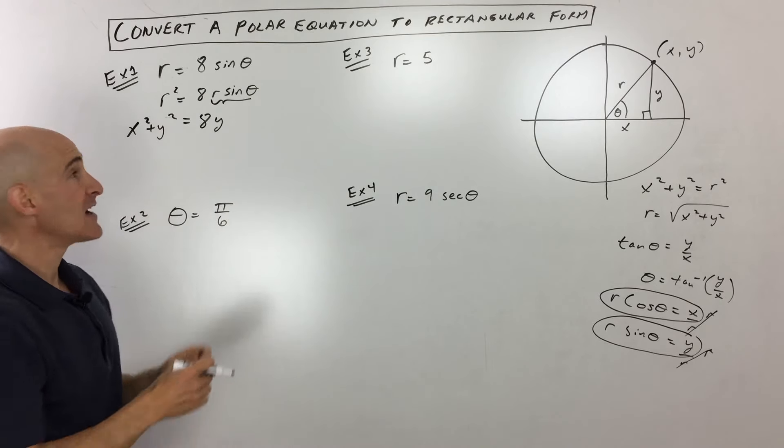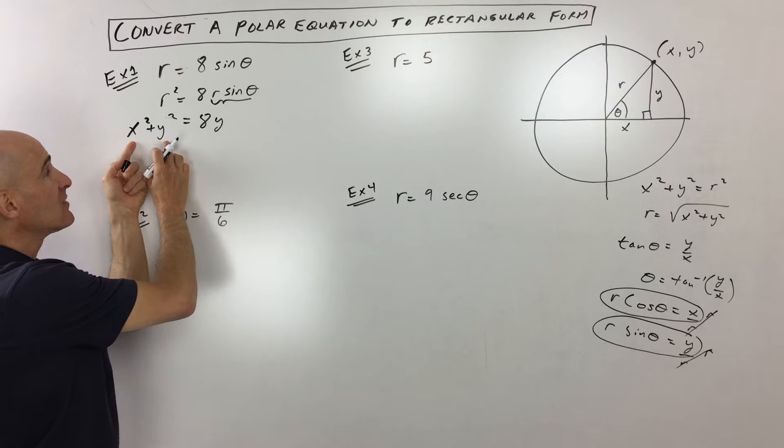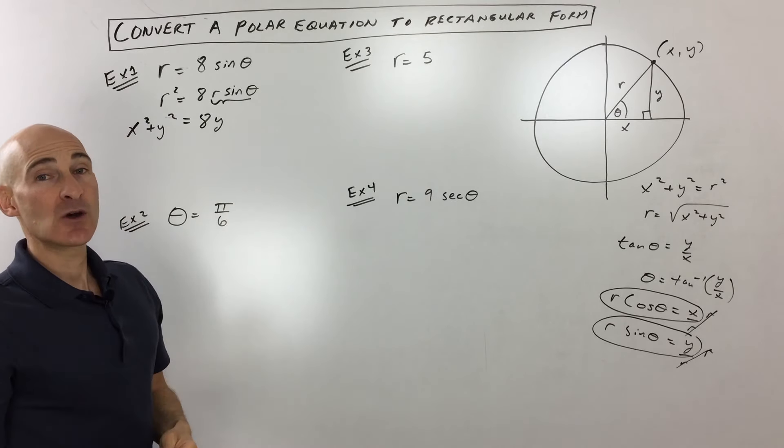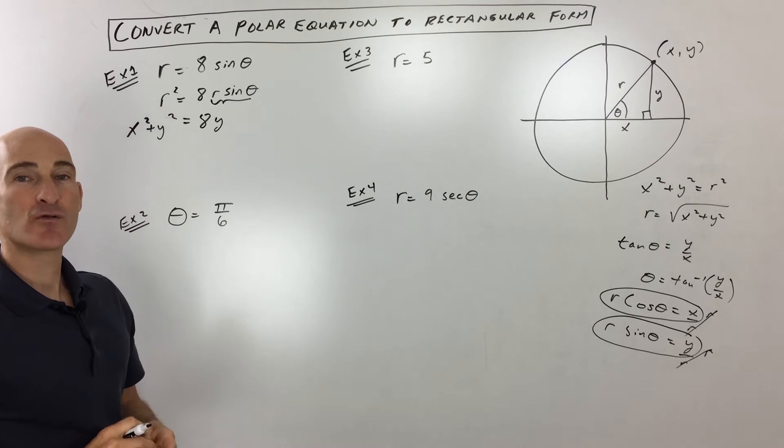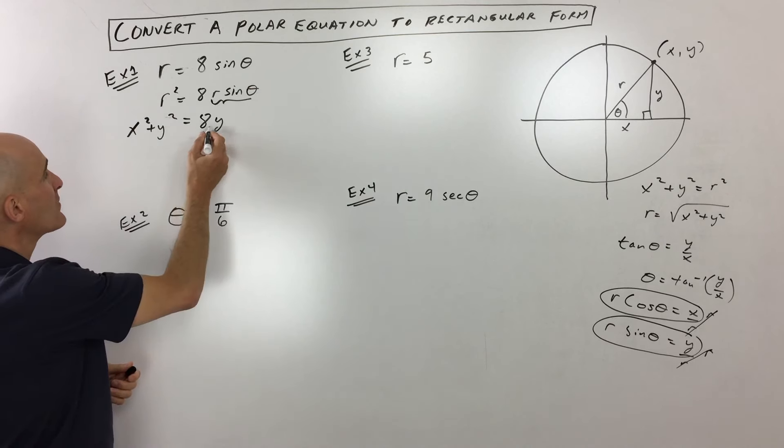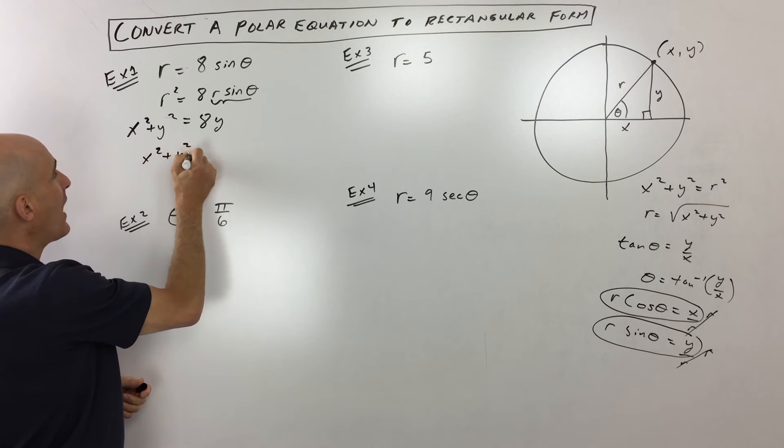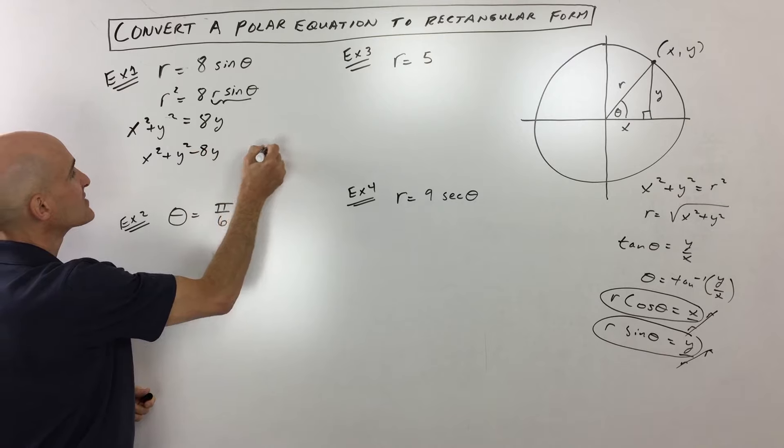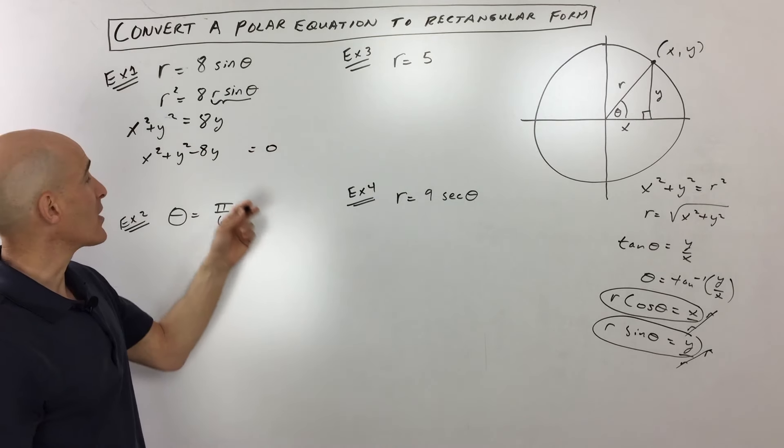But what you might recognize is that this is the equation of a circle, so you might want to take it one step further and put it into the standard form of the equation of a circle. So what I'm going to do is subtract the eight y and set this to zero. And then we're going to complete the square.